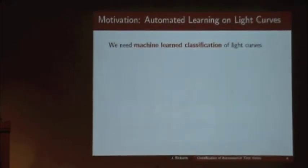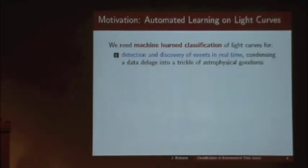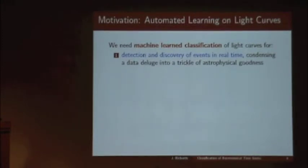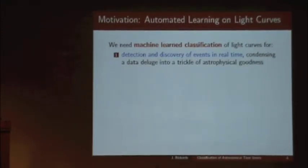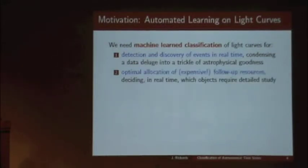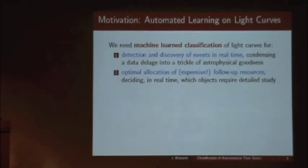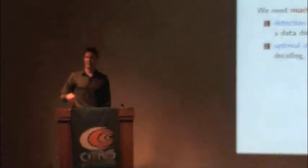Why do we need machine learning classification resources? There are several astrophysical reasons we want this versus just detecting and discovering objects in real-time. As Dobie Poznowski said earlier, we have this astronomical haystack and we want to pull out a couple of needles — things that are important for our science. A related theme is optimal allocation of resources. Typically we have an array of follow-up telescopes which we can use to observe finer information about certain objects, but these are costly resources and we don't want to waste them on objects that aren't important to the science we care about.